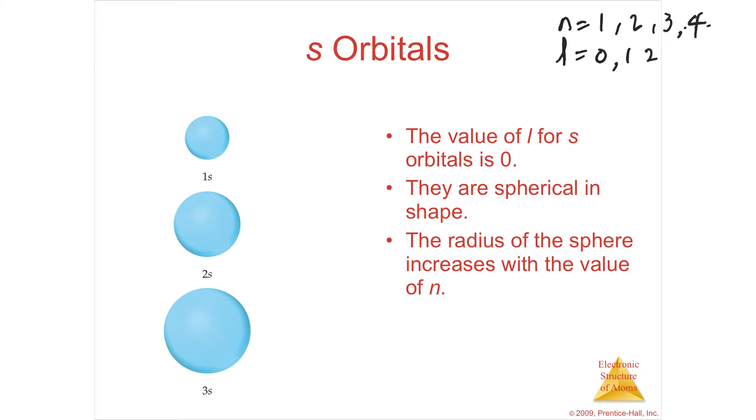So you'd have 0, 1, 2, and 3. The m sub l subshell can go from negative 3 to positive 3. Negative 3, negative 2, negative 1, 0, 1, 2, 3.